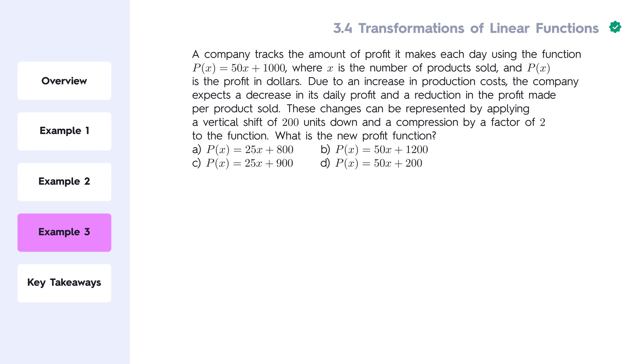Due to an increase in production costs, the company expects a decrease in its daily profit and a reduction in the profit made per product sold. These changes can be represented by applying a vertical shift of 200 units down and a compression by a factor of 2 to the function. What is the new profit function?